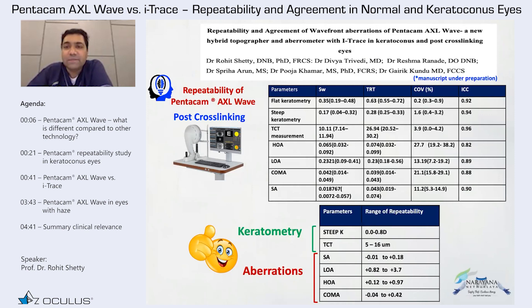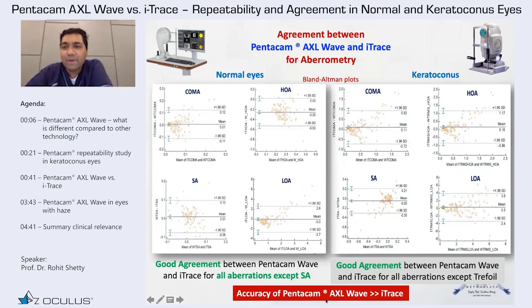We looked not only at curvature but at all the aberrations. Comparison is a thief of joy, but still we have to compare. So we did compare with the iTrace and other aberrometers. Unfortunately, many other Hartmann-Shack aberrometers were not even able to image even one scan properly — that was a challenge.